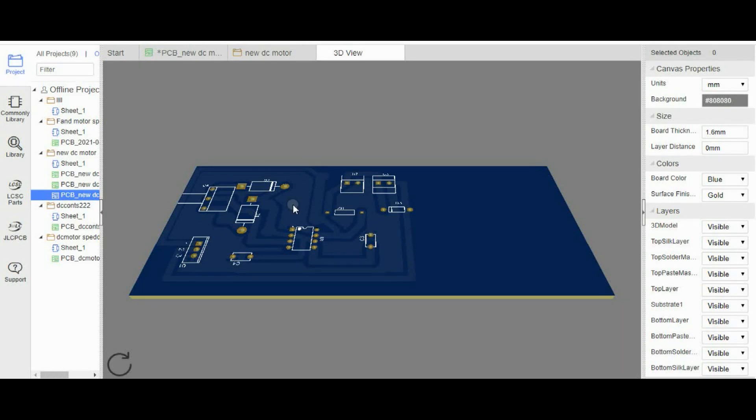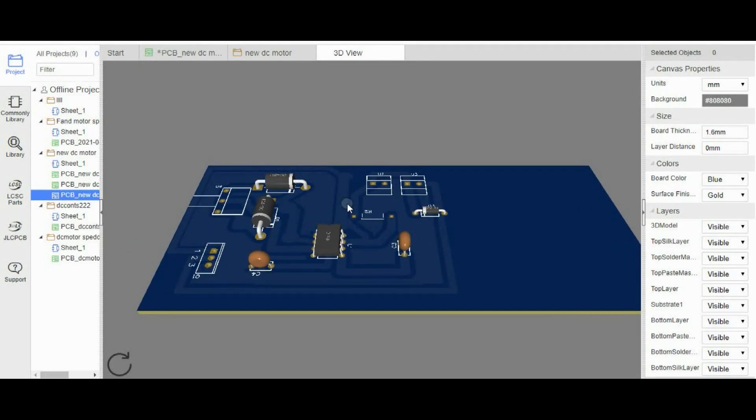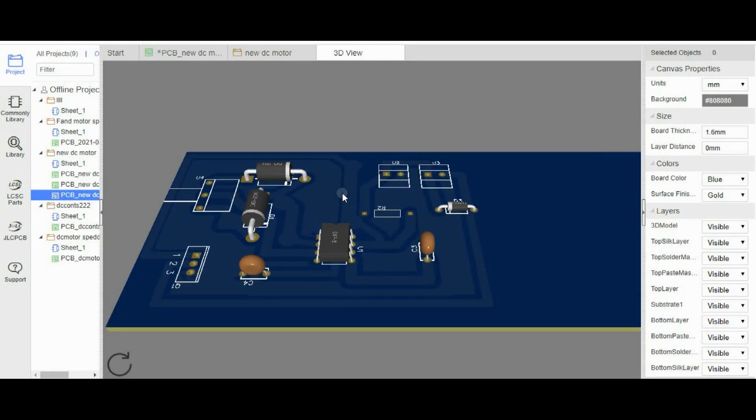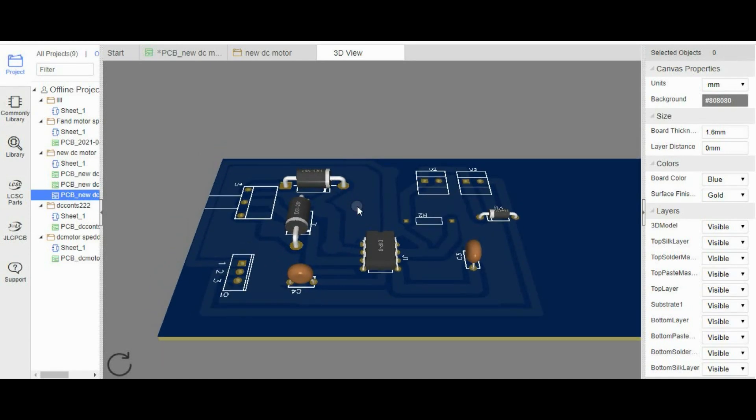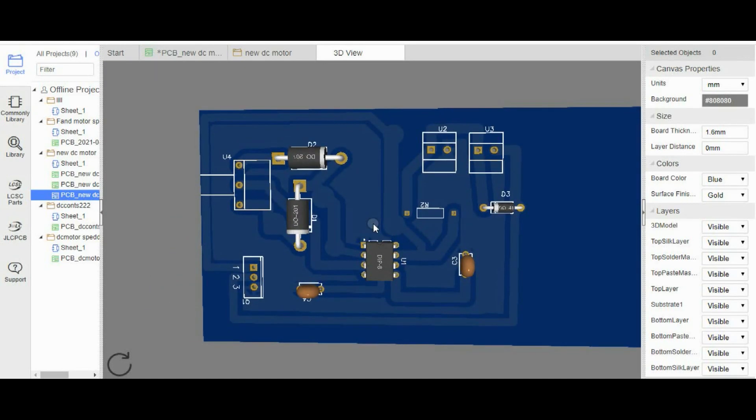This is the 3D view of our PCB, so this is how it will look like on the actual PCB. This is the top part and here is the bottom part.